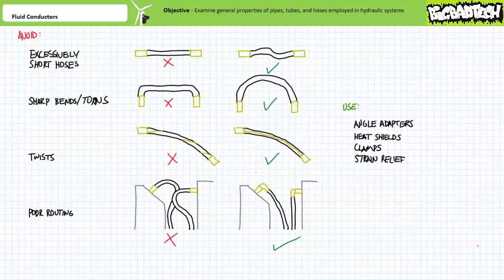Hoses can be clamped, shielded, and or make use of strain relief adapters to prevent wear due to abrasion, vibration, or high heat. Angle adapters make connections in small clearance areas a possibility without the necessity of a sharp bend.